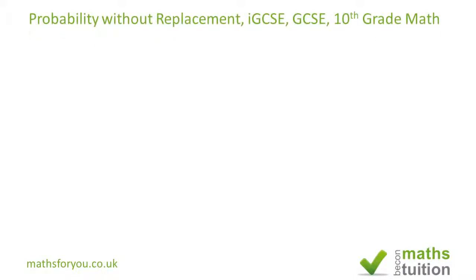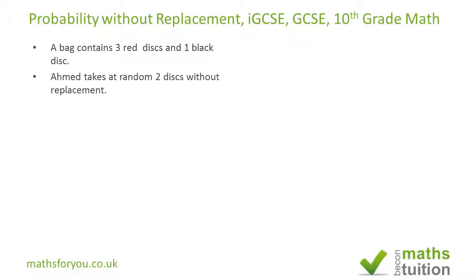Hello and welcome to this very short exercise on probability without replacement. It is, as you will expect, an IGCSE examination question. Now in the actual exam question there are three subsections — the middle subsection is reasonably easy so I've left it out. It says: a bag contains three red disks and one black disk, which makes four in total. Ahmed picks two disks at random without replacement.